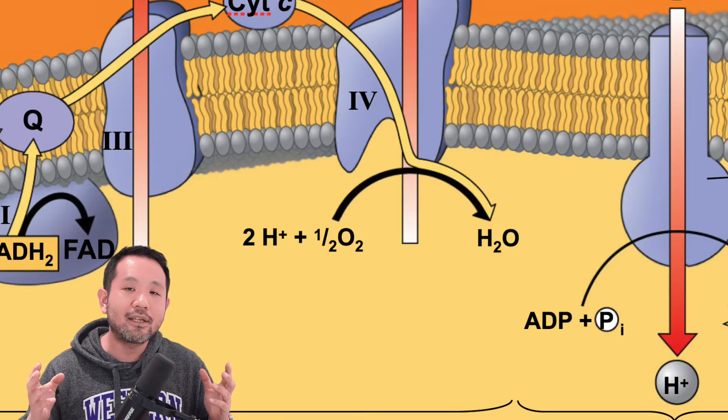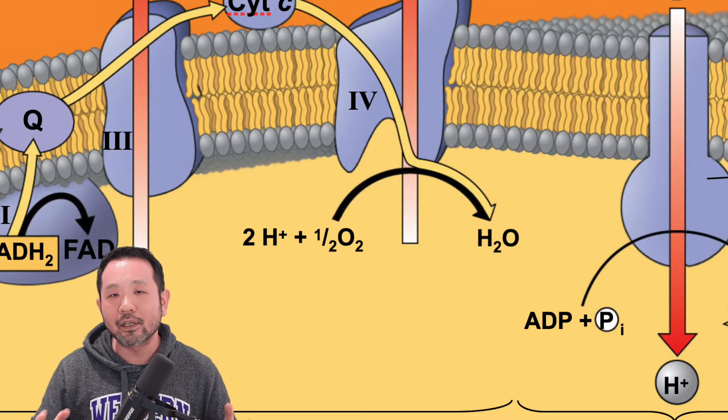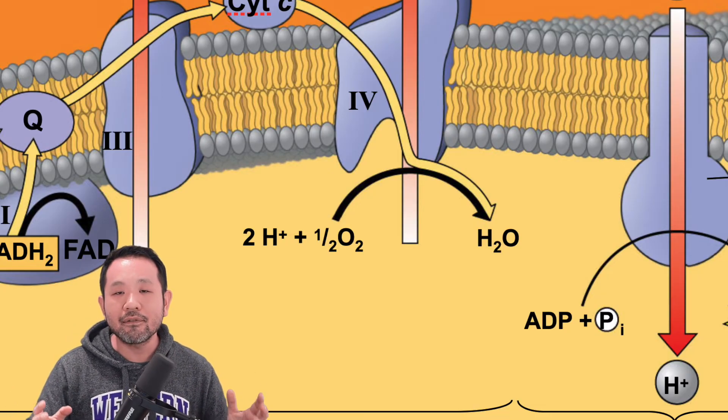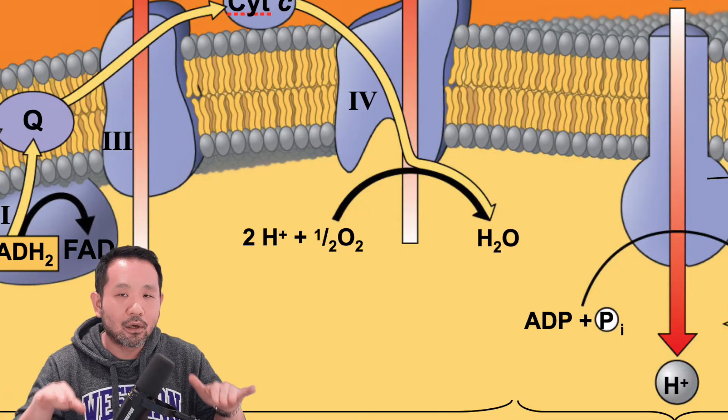Remember that these electrons by the end of protein complex four have very low energy. So even though they form H2O, these electrons are lower in energy, therefore not giving water any substantial energy — hence, a bottle of water has zero calories. I hope that makes sense as to what that energy was used for within this entire process.